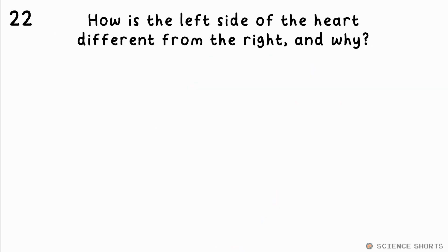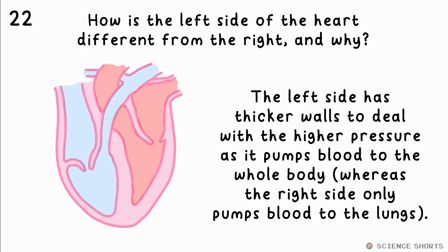Question 22. How is the left side of the heart different from the right, and why? The left side has thicker walls to deal with the higher pressure, as it pumps blood to the whole body, whereas the right side only pumps blood to the lungs.